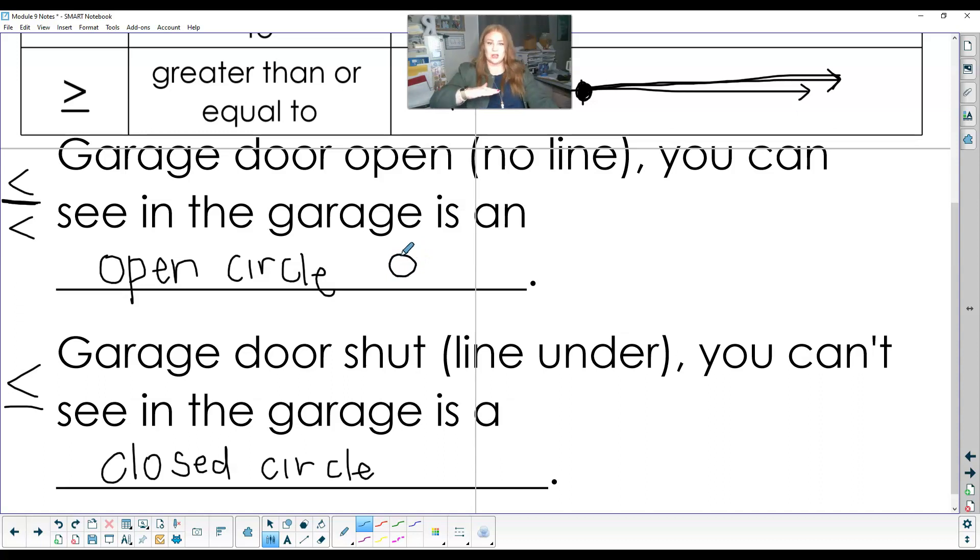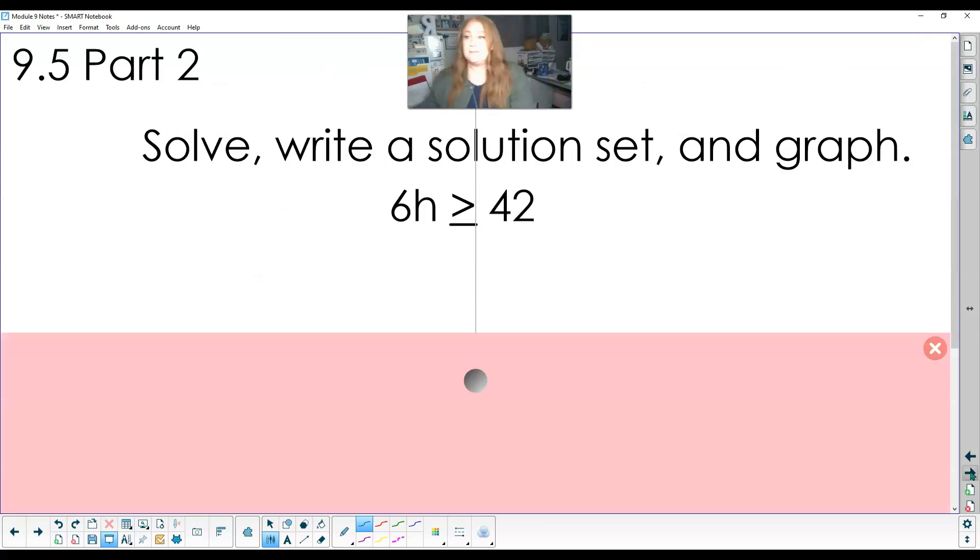So open. I can't see the line. I can see everything in the garage. It is open. The garage closes. Now it's included in that. And I fill in that circle so that we can't see into the garage. So there's just another way to remember it. It's included. Fill it in or the garage is shut. I cannot see into the garage. We want to fill that in.